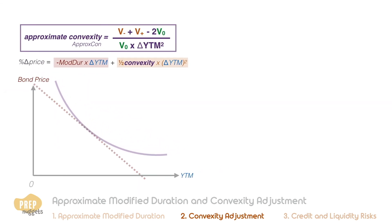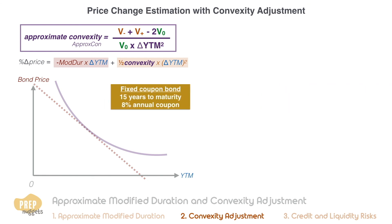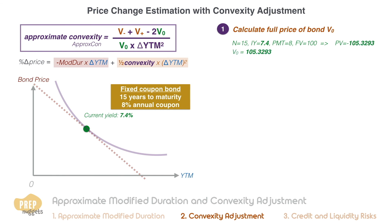Let's illustrate all that we've learned with an example. A fixed coupon bond with 15 years to maturity pays out an 8% coupon annually, and the bond's current yield to maturity is 7.4%. First, we calculate the full price of the bond per 100 of par value at the current yield to maturity of 7.4%. Using the discounted cash flow method, we discount all the cash flows by 7.4%, giving us the original price V0 of 105.3293 per 100 par. Now let's calculate V minus and V plus using a one basis point decrease and increase in yield — this will allow us to calculate the approximate modified duration and the approximate convexity.